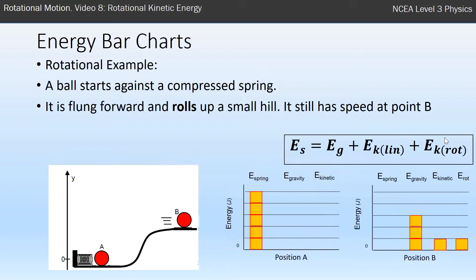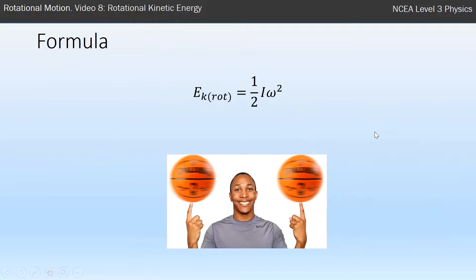You've got the gravitational energy formula from last year. You've got a linear kinetic energy formula from last year, just a half mv squared. This year, the rotational kinetic energy formula is a half I omega squared. So this is very equivalent to a half mv squared. Instead of m, we've got rotational inertia I. Instead of v, we've got rotational velocity, omega.